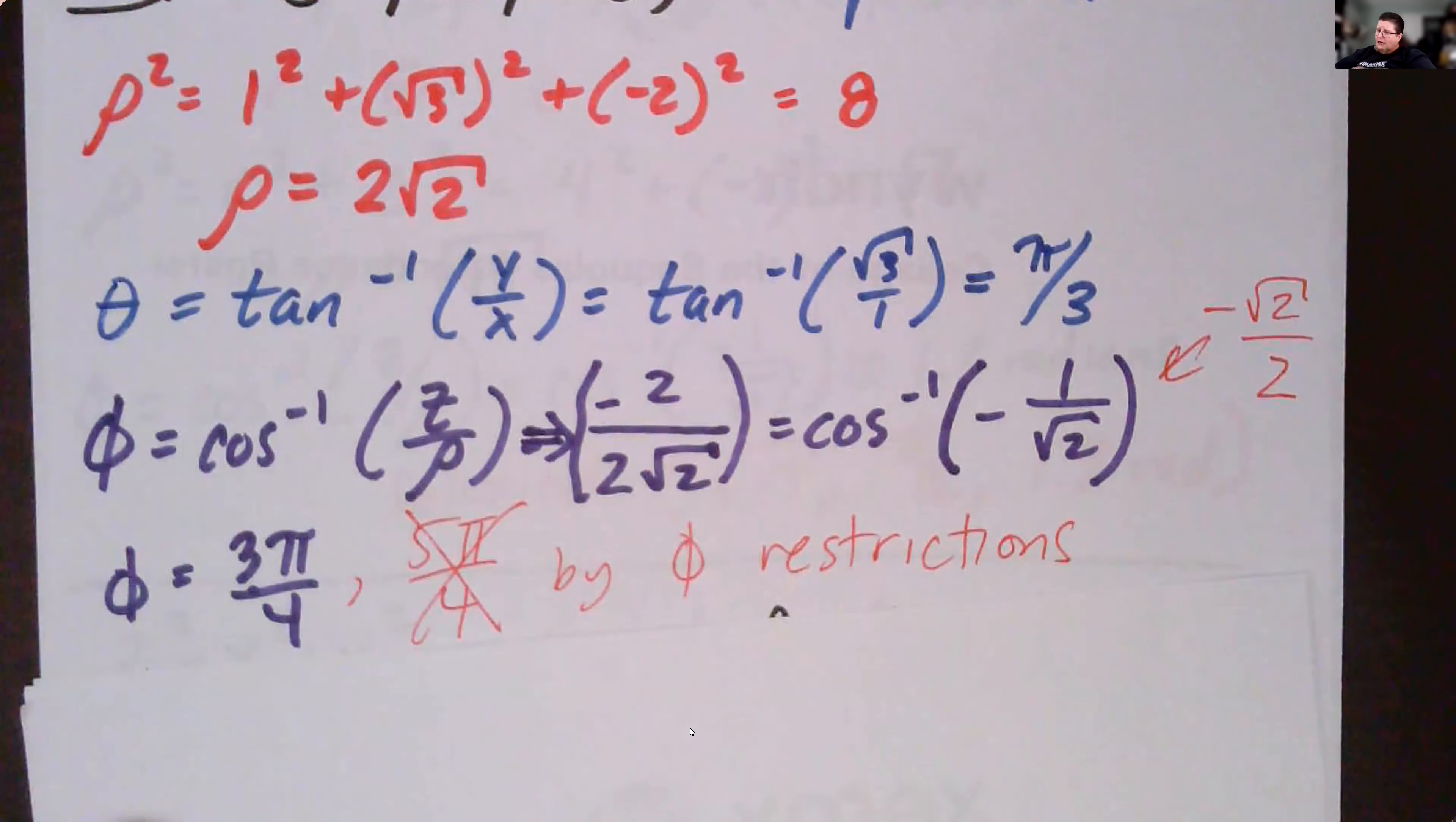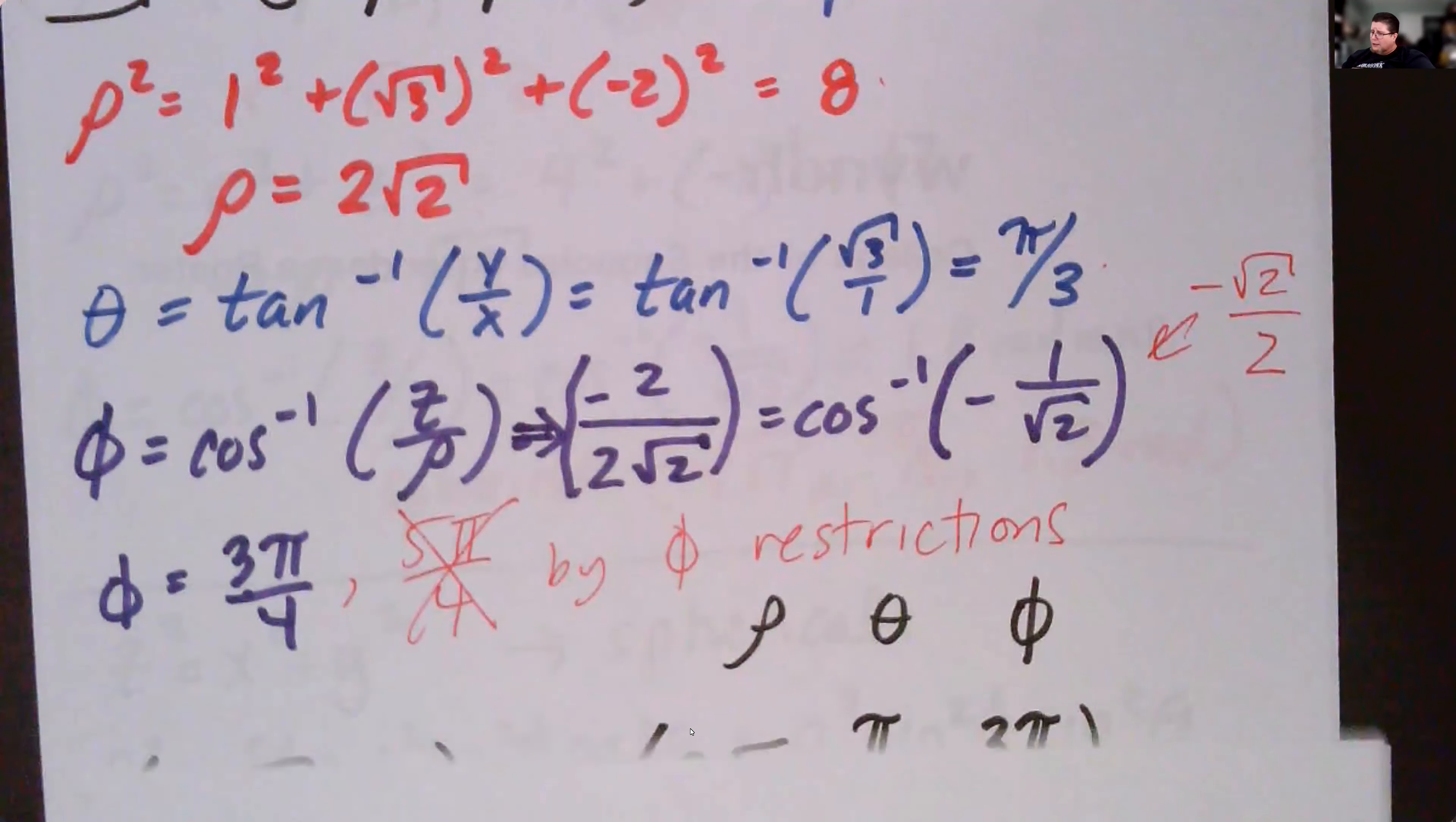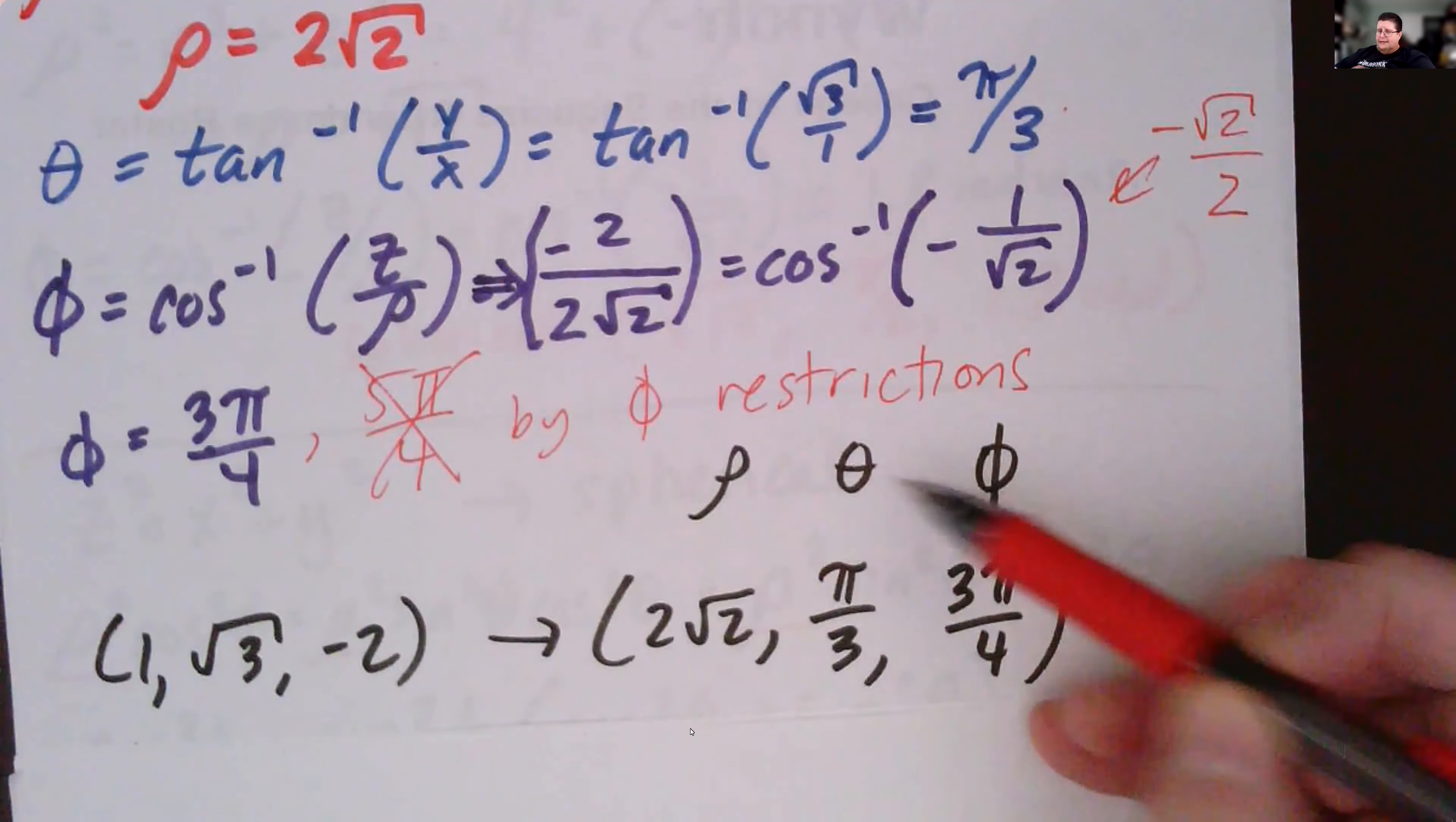So I've got rho is two root two, I've got theta is pi over three, and I've got phi is three pi over four. And spherical coordinates we've got that's our setup. Remember we've got rho, theta, phi.